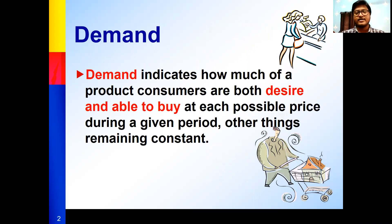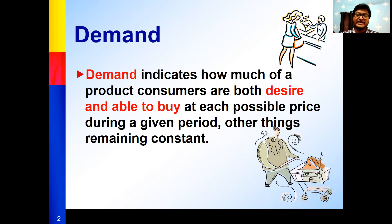The definition of demand in general has a different meaning. You can say a commodity has demand only if that commodity satisfies two conditions. The first condition is called desire, and the second one is called ability to buy, or purchasing power. Only then can you say a commodity has demand.